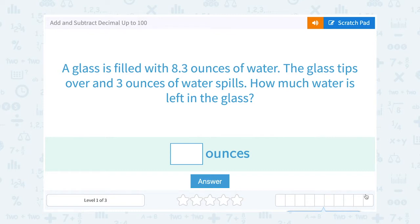A glass is filled with 8.3 ounces of water. The glass tips over and 3 ounces of water spill. How much water is left in the glass?